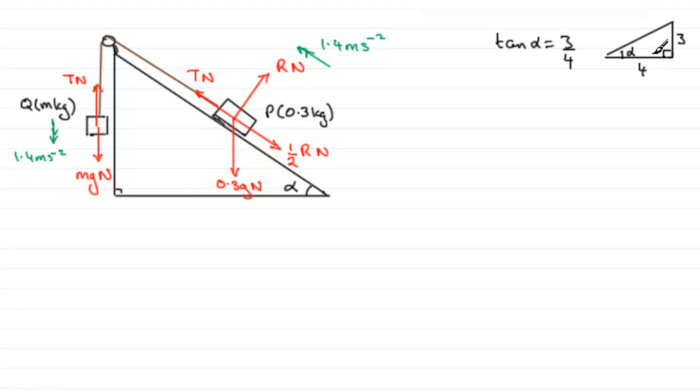And by Pythagoras' theorem, this is a well-known 3-4-5 triangle. So without finding alpha, we would know things like cos of alpha, which would be 4 fifths adjacent over hypotenuse, and the sine of alpha, which would be opposite over hypotenuse, 3 fifths. Okay, so that's that part done.